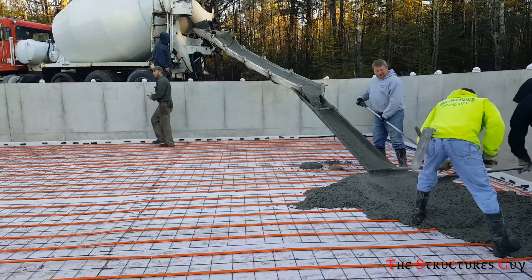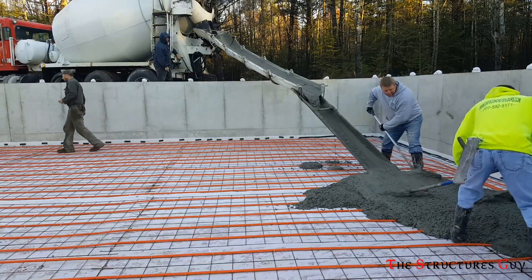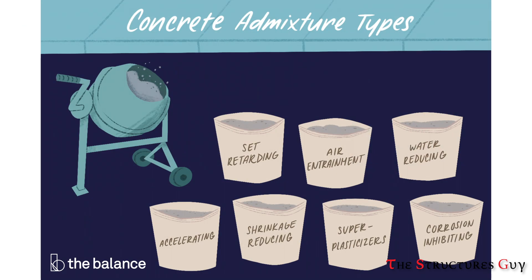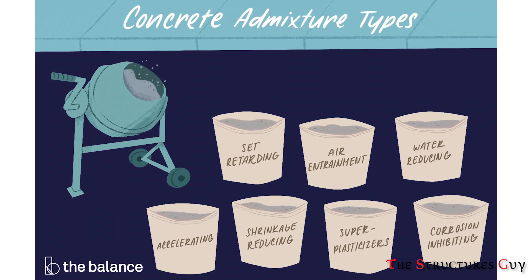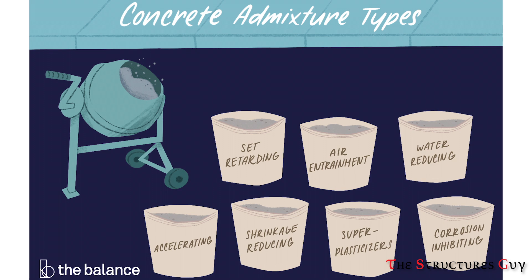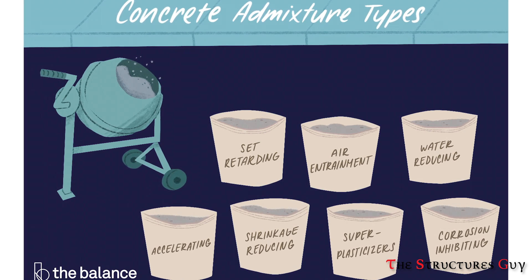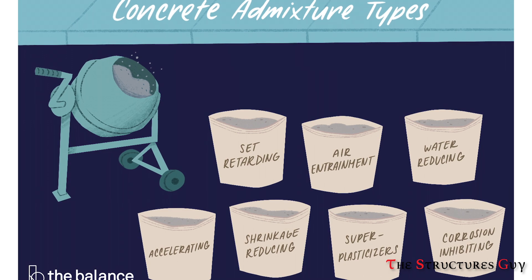Concrete, being the most used man-made material, is usually made of cement, water, fine aggregates, coarse aggregates, and sometimes admixtures or additives, all mixed in certain ratios depending on its uses. We add those admixtures for a variety of reasons, but that is a topic for another video.